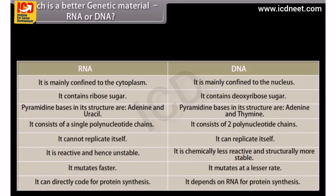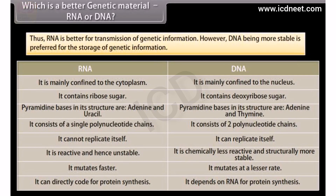Which is a better genetic material — RNA or DNA? These are some characteristics of RNA and DNA. RNA is a catalyst. DNA, being more stable, is preferred for the storage of genetic information, while RNA is suited for the transmission of genetic information.